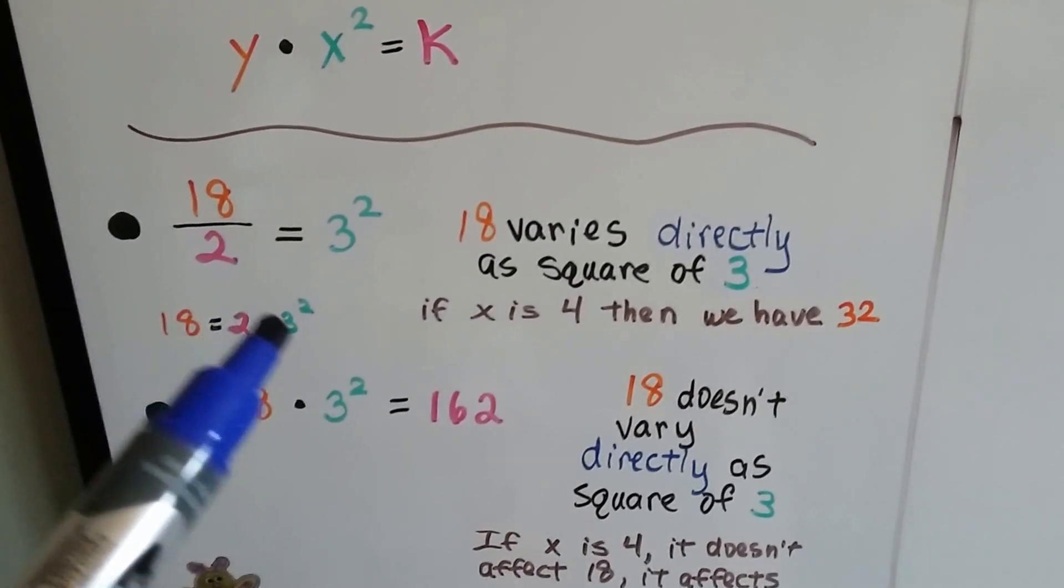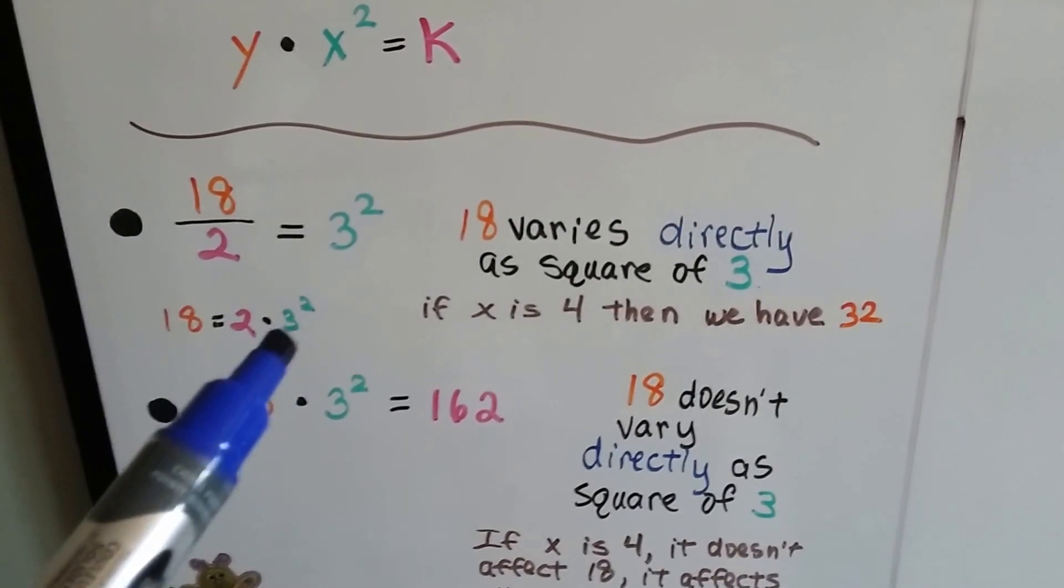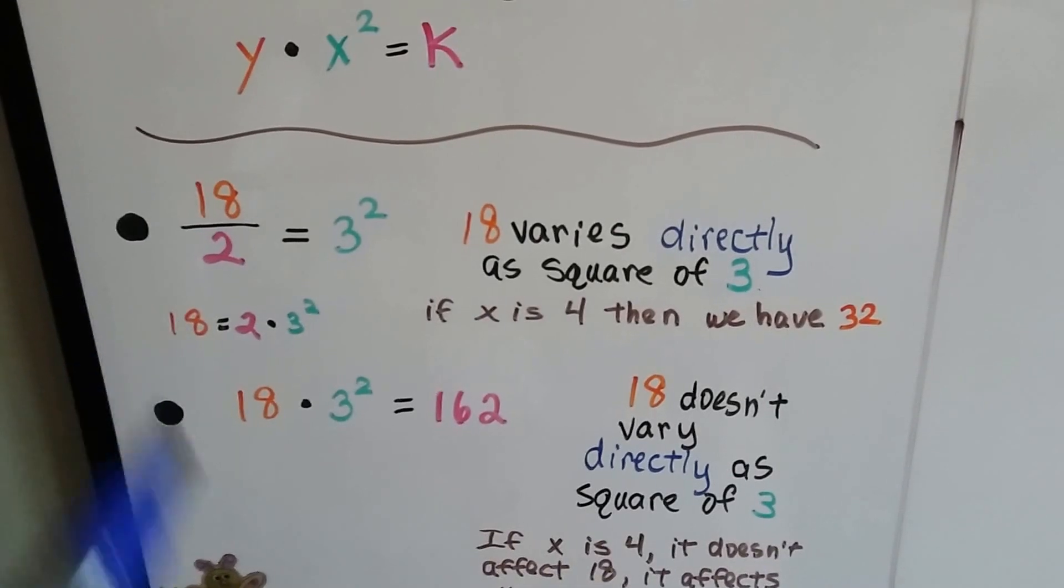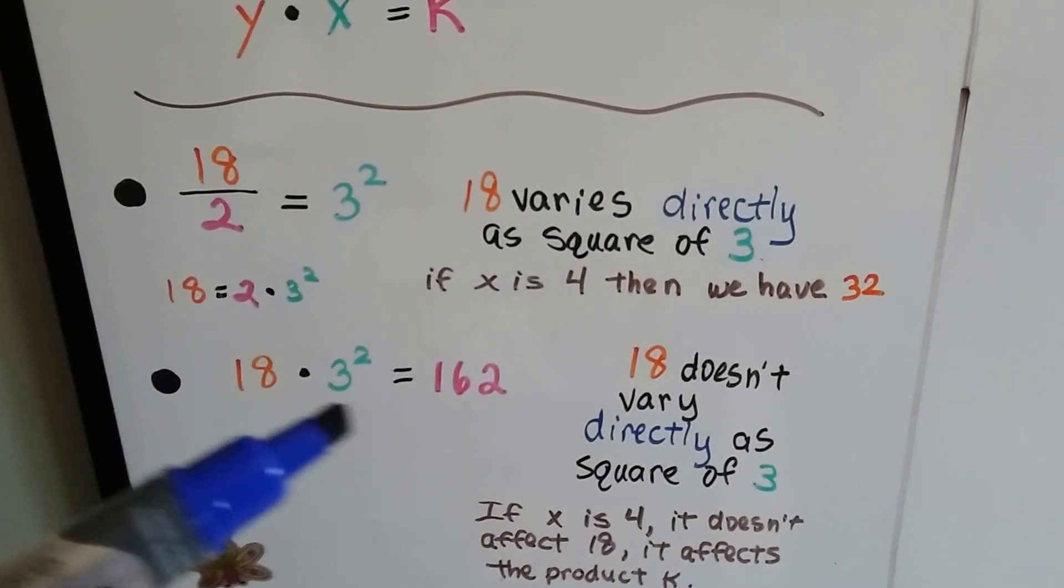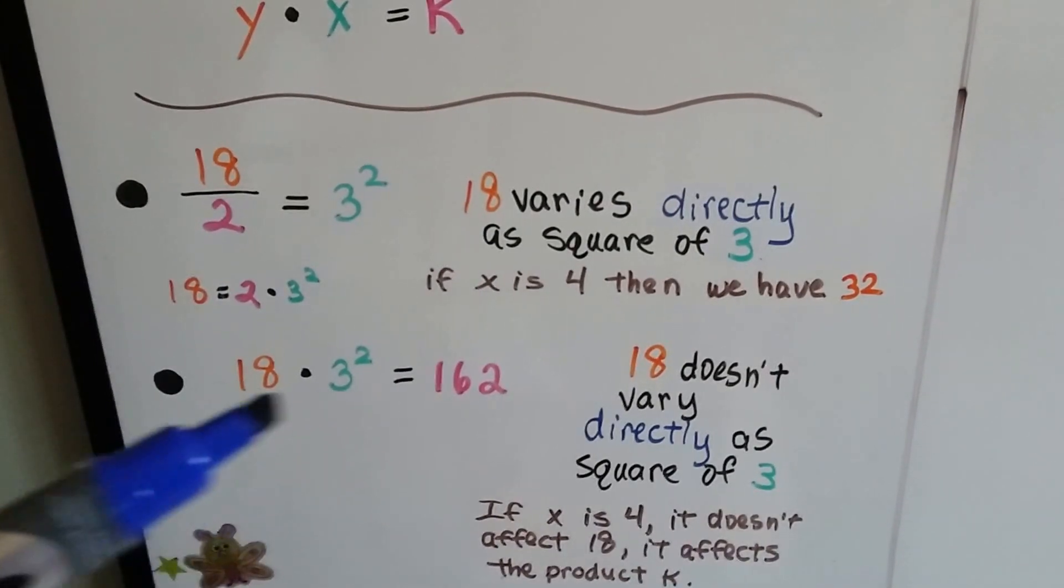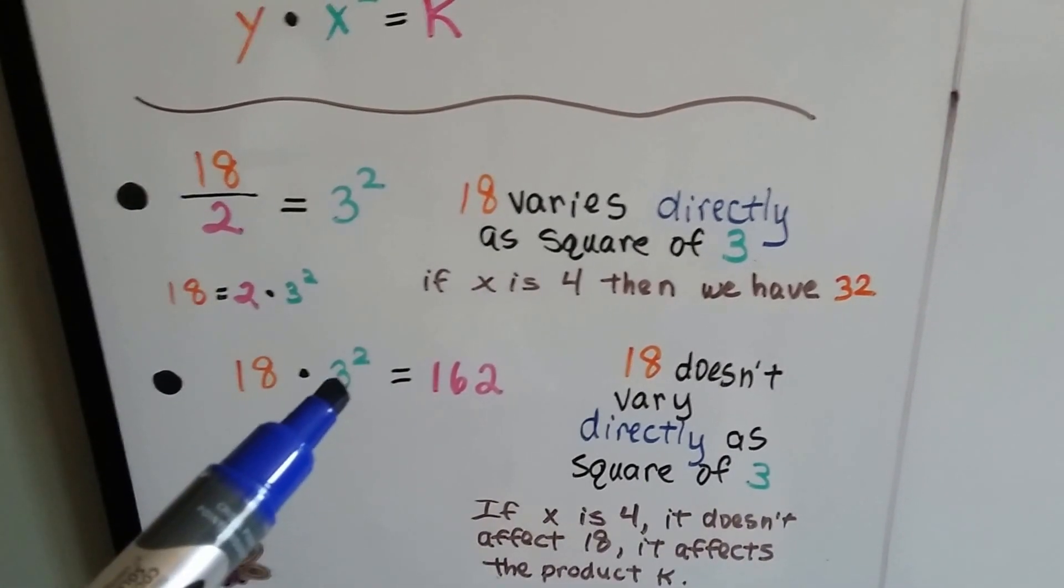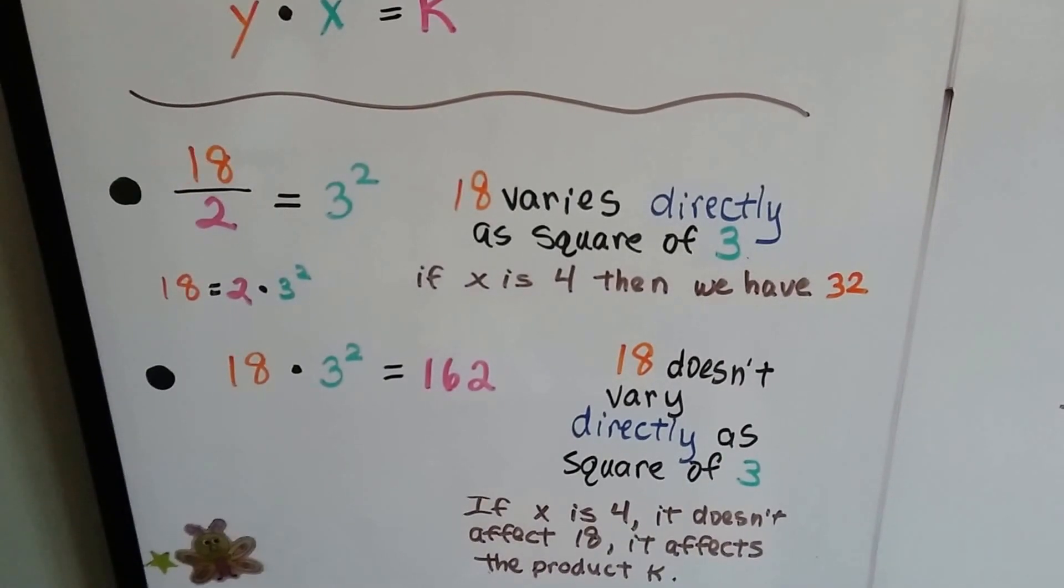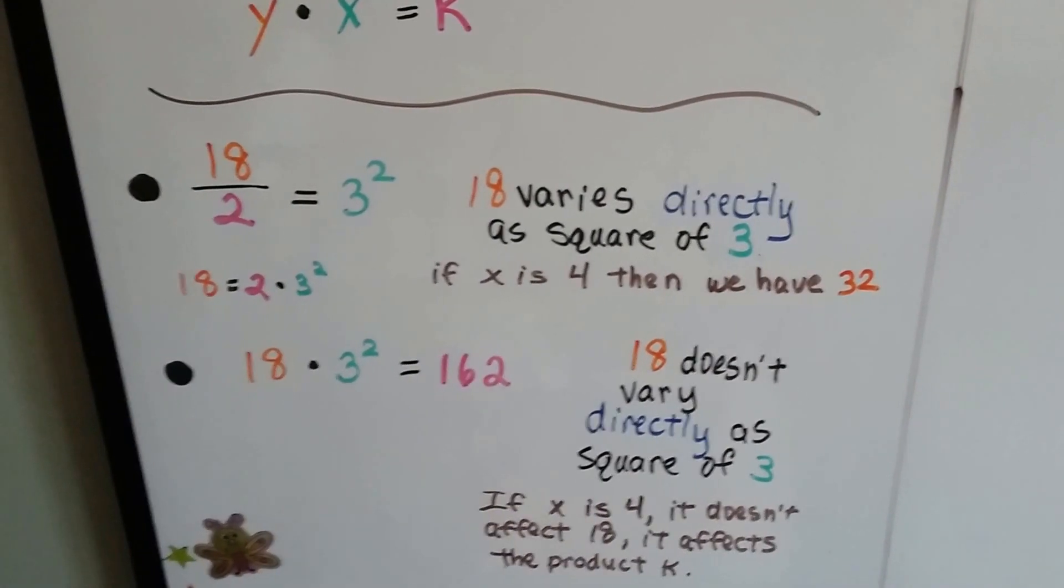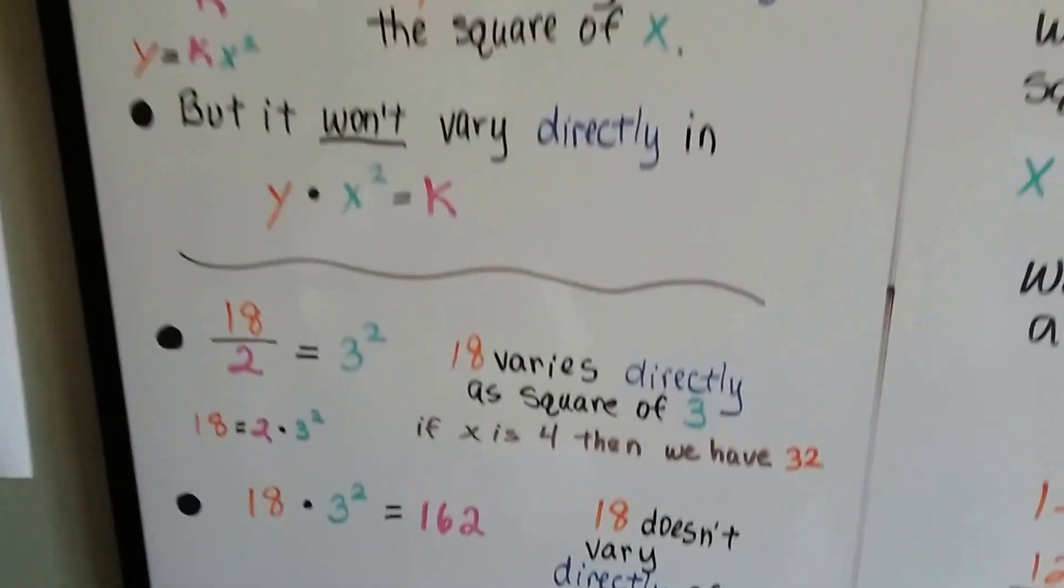Same thing here. If we change this to a 4, that's 16 times 2, that's going to change that to a 32. But if we do multiplication of the y and x value, then if we change this to a 4, that's not going to change the 18. It's going to change the product. That's going to make that change, not the 18. So that's what we're talking about.